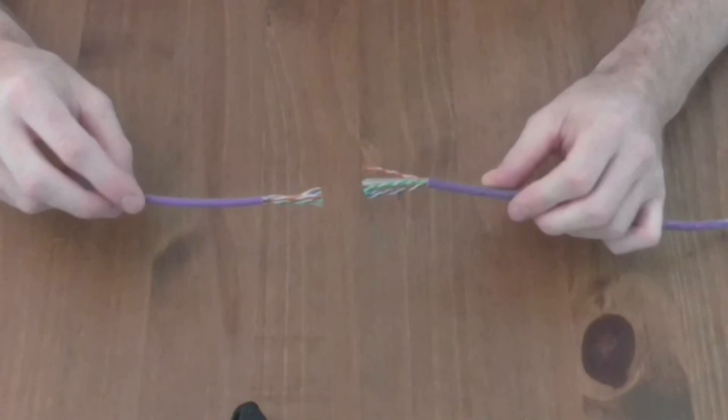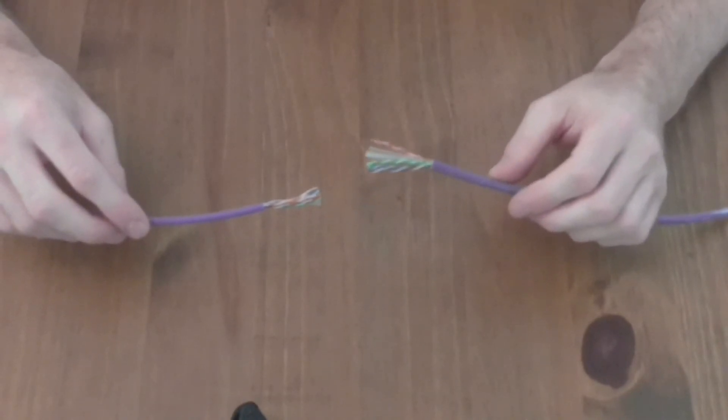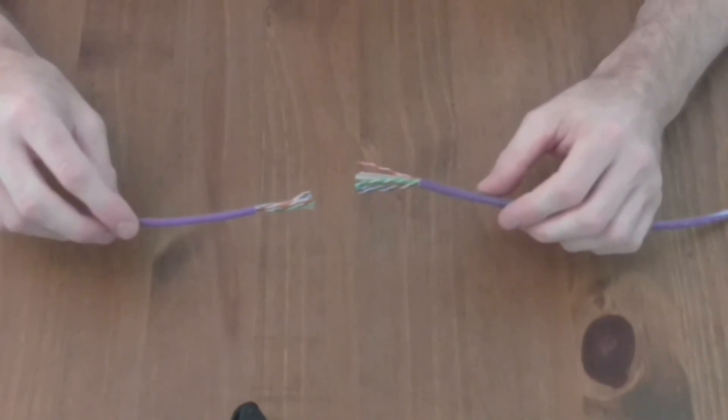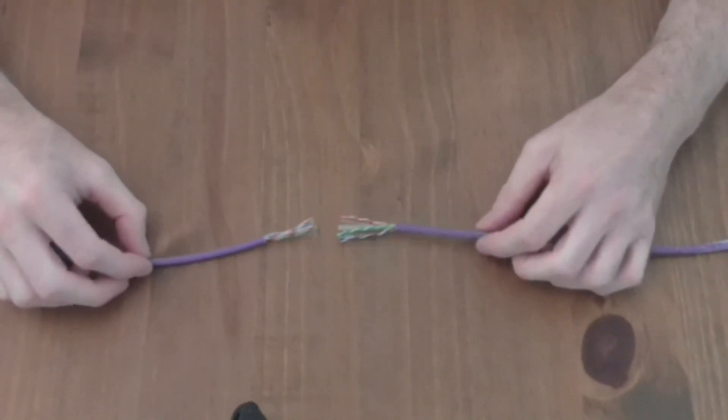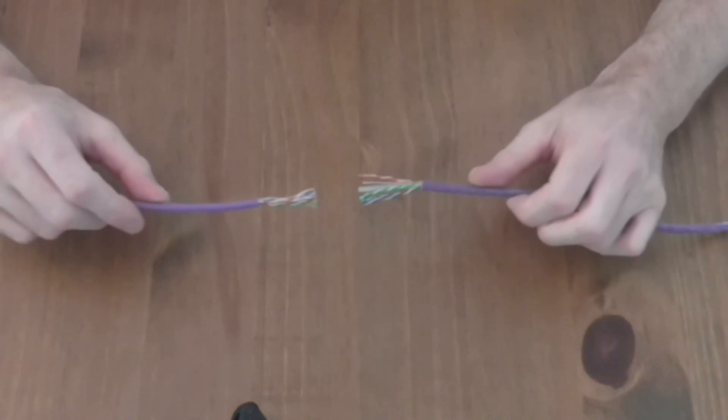I'd probably spend a little bit more and just get the Cat6 because it's future proofing a little bit more. If we do ever get to a stage where we've got 10 gigabit speeds then you'll be prepared and you don't have to change the cable, which obviously can be quite disruptive.